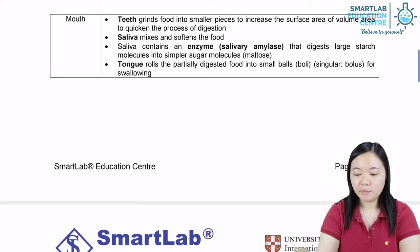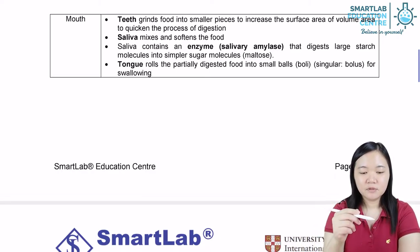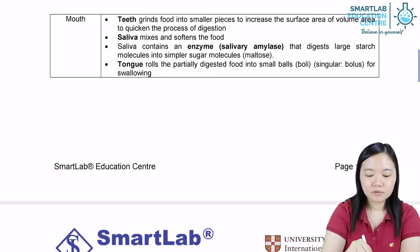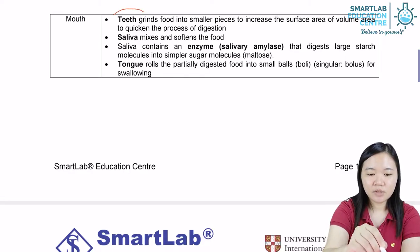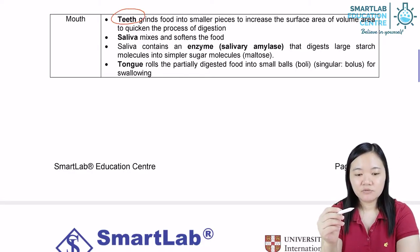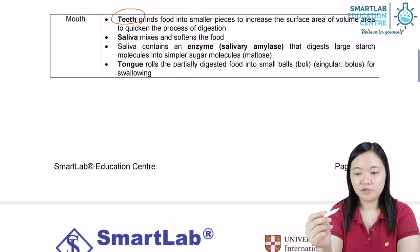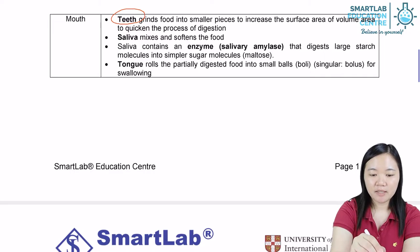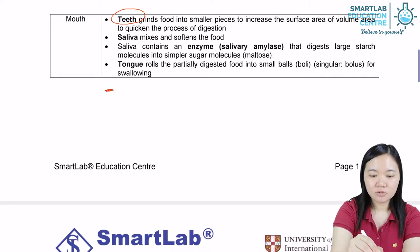Let's take a look at the mouth in detail. The mouth contains teeth. Teeth grind food into smaller pieces to increase the surface area to volume ratio. The mouth also secretes saliva.